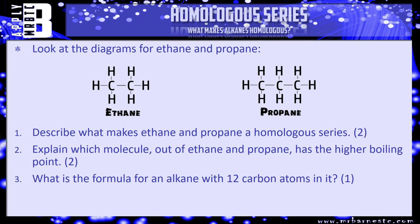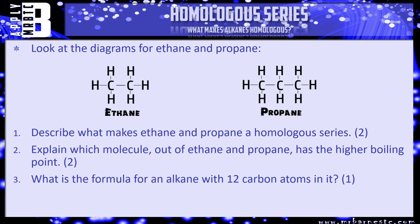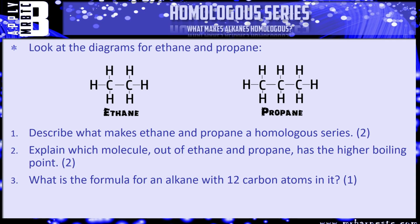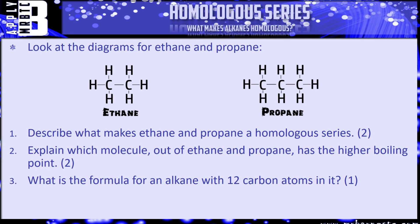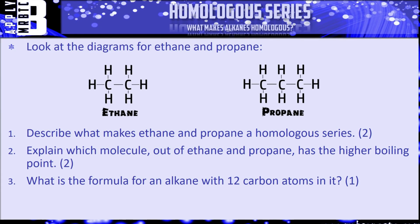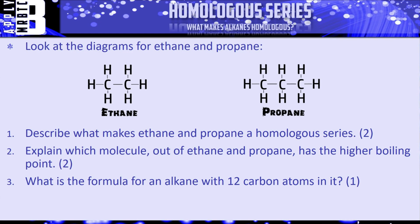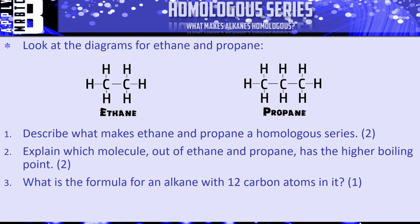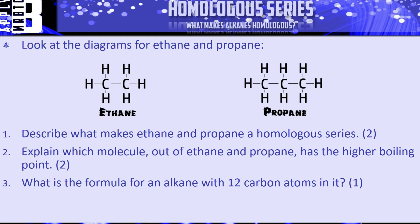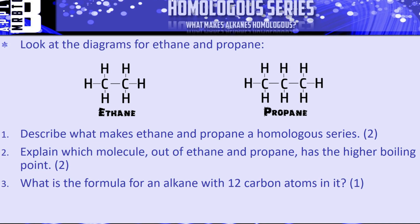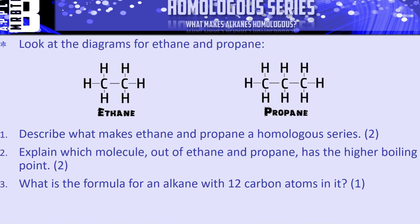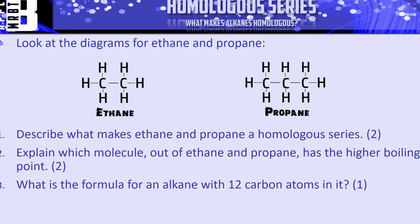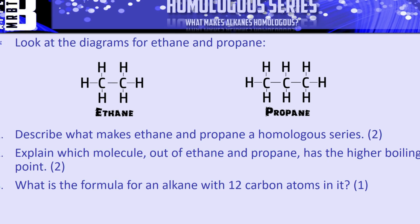Now let's look at the type of questions you can be asked on this. Question one: look at the diagrams for ethane C2H6 and propane C3H8 — describe what makes them a homologous series. What are the four things that make something homologous? Question two: explain which molecule out of ethane and propane has the higher boiling point, and why. Question three: what is the formula for an alkane with 12 carbon atoms? Think through the formula CnH2n+2 where n is 12. Pause the video and have a go.